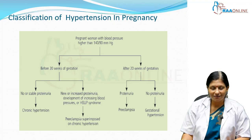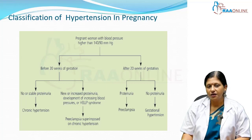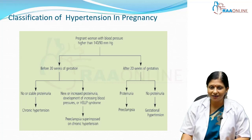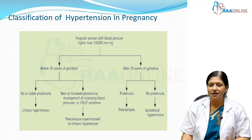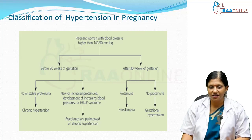Hypertension in pregnancy is defined as blood pressure of more than 140 systolic and 90 diastolic. Before 20 weeks of gestation, it is usually a chronic hypertensive individual who has become pregnant, or it is an atypical pre-eclampsia in the case of molar pregnancies. Pregnancy-induced hypertension is defined as systolic more than 140 or diastolic more than 90 in an individual more than 20 weeks pregnant. Before 20 weeks, if the patient has no proteinuria or stable proteinuria, we are dealing with a case of chronic hypertension.